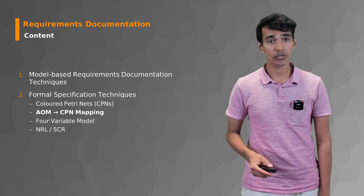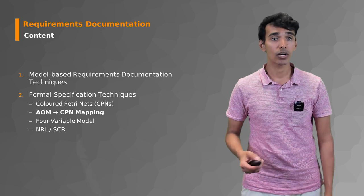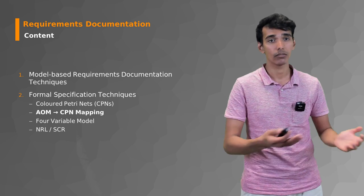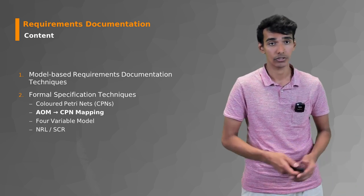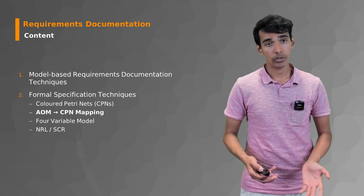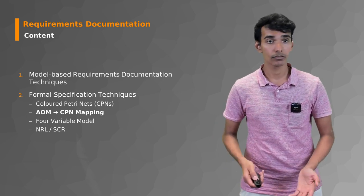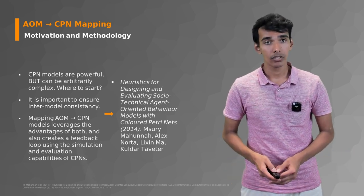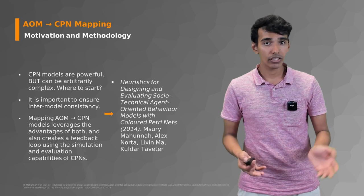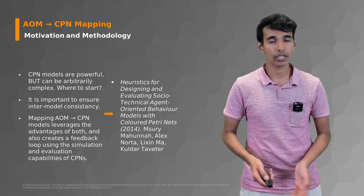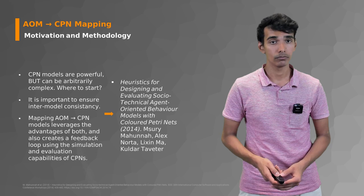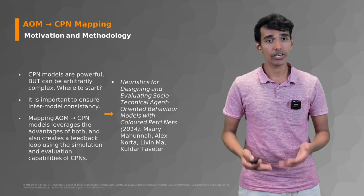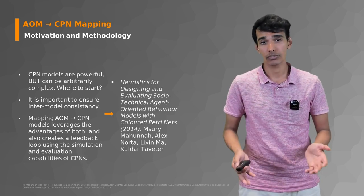Now that we know a little bit about colored Petri nets, we're going to try and connect colored Petri nets, a formal model, to one of the informal models that we learned in the previous lecture. We're going to map some of our AOM models to CPNs, but how exactly do we do this and why? CPN models are really powerful, but they're also really complex, and in some situations it's very hard to know exactly where to start with a CPN model.